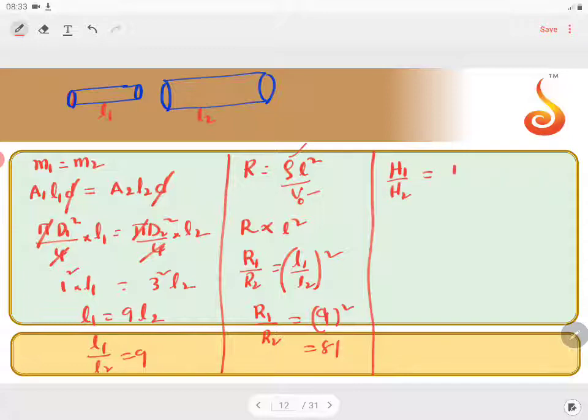H1 by H2 equal to current will be same. I square R1, T will be same. So I square R2 into T. T will be same, I will be same. So ratio of heats produced will be in the ratio of resistances. What is the ratio of resistances? 81 is to 1. 81 is to 1. Thank you.